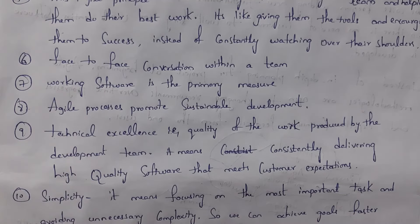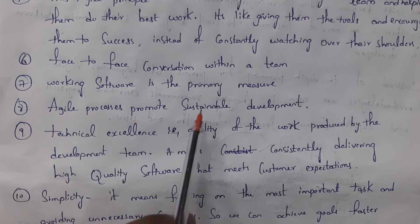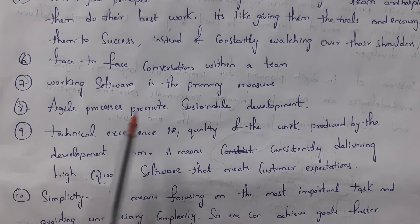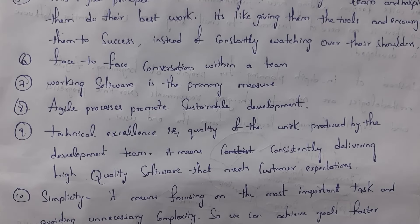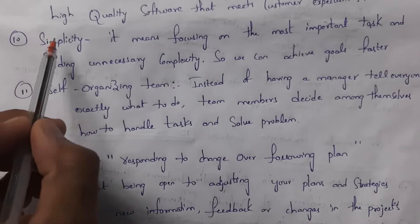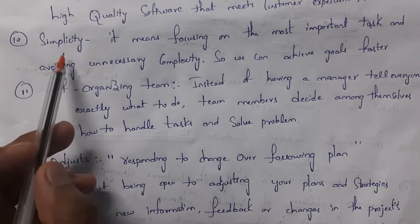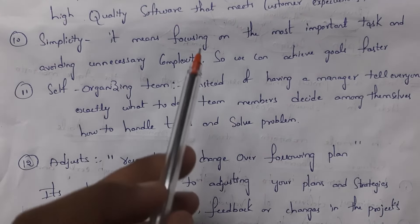The seventh principle: working software is the primary measure — the team must deliver working software. The eighth principle: agile process promotes sustainable, continuous development. The ninth principle: technical excellence — the development team must work continuously and deliver high quality software that meets customer expectations. The tenth principle: simplicity — focus only on important tasks, avoid unnecessary work so goals can be achieved faster.